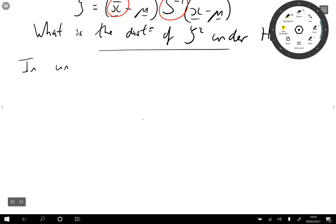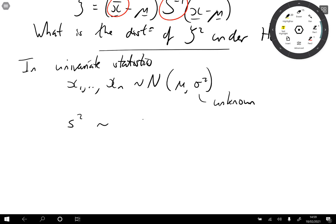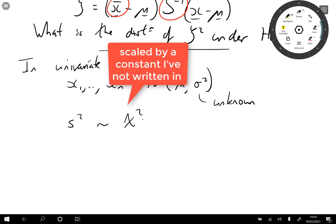So in univariate statistics, if we've got x1 up to xn from a normal distribution with mean mu and variance sigma squared, where sigma squared is now unknown, what we often do is estimate sigma squared by s squared, the sample variance, and we know that this has a chi squared distribution.